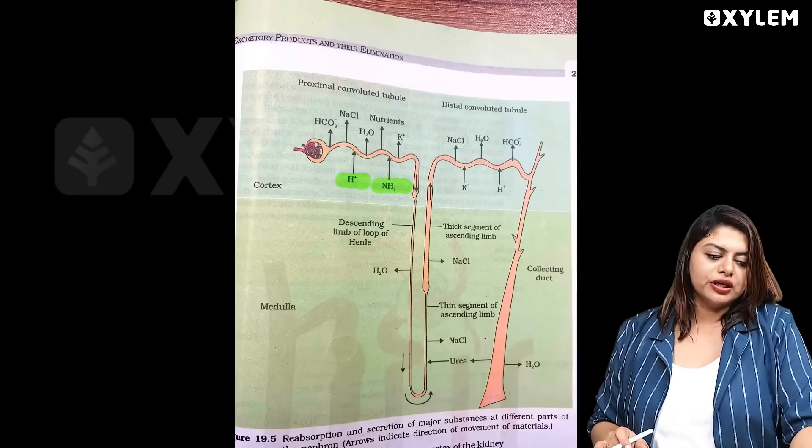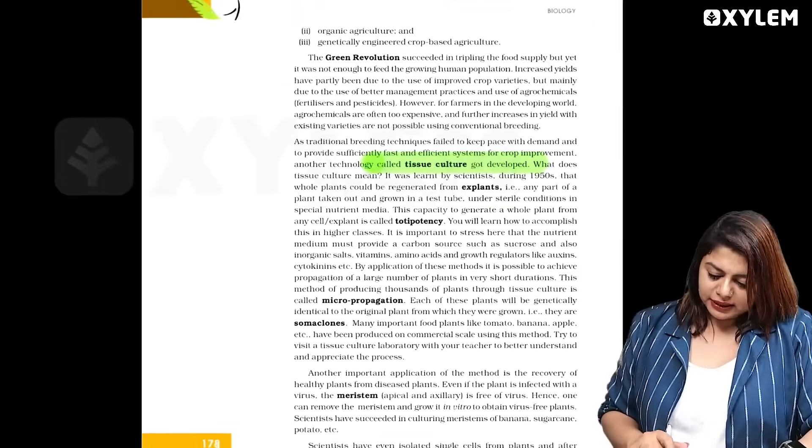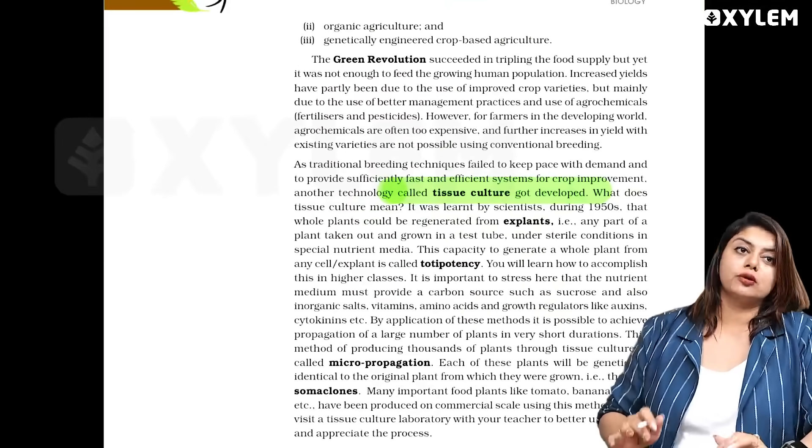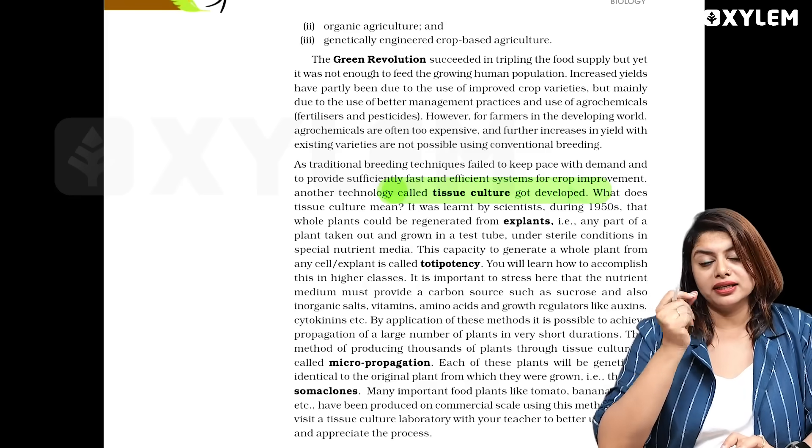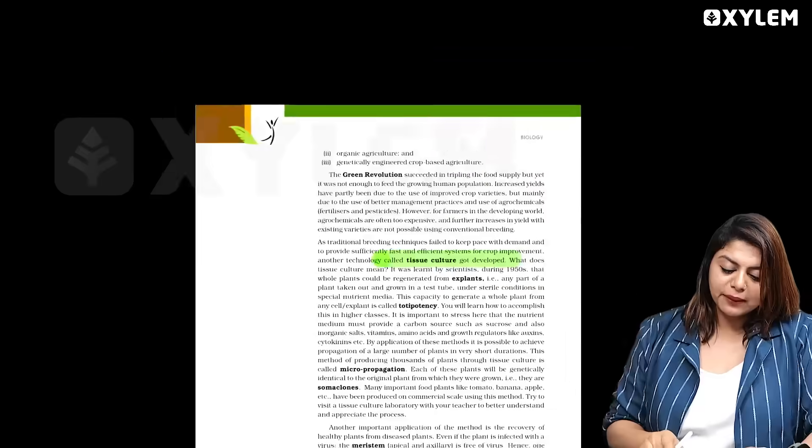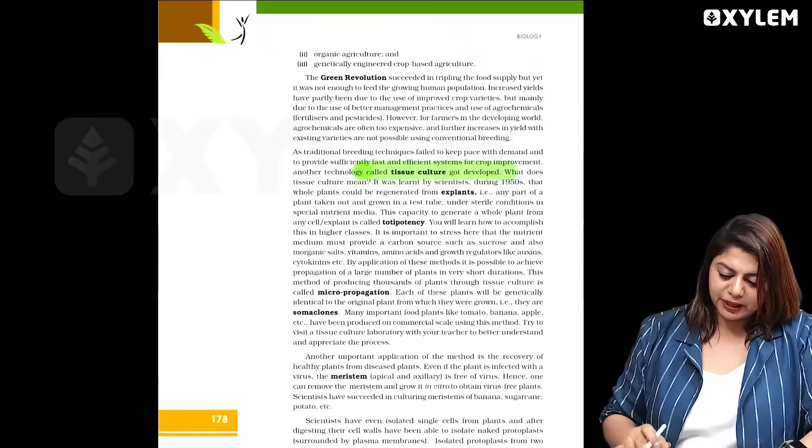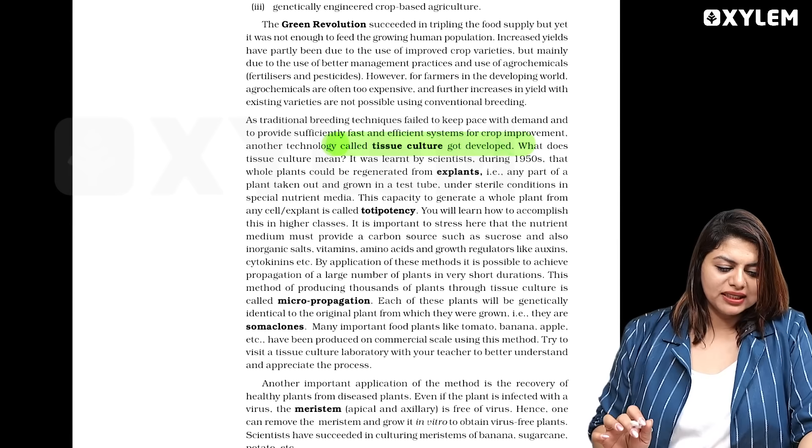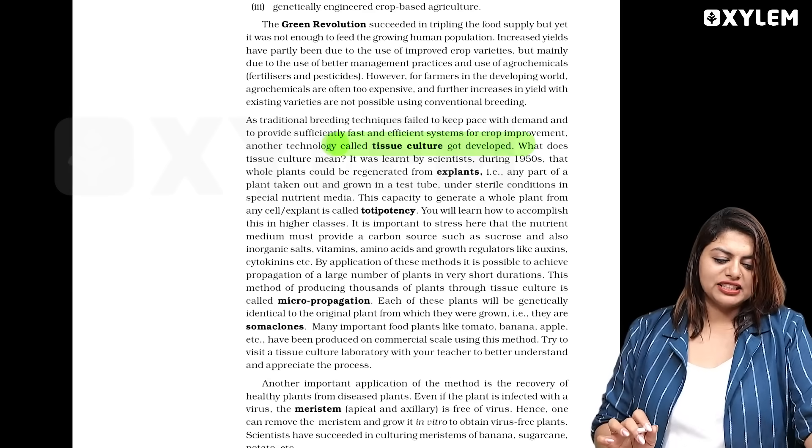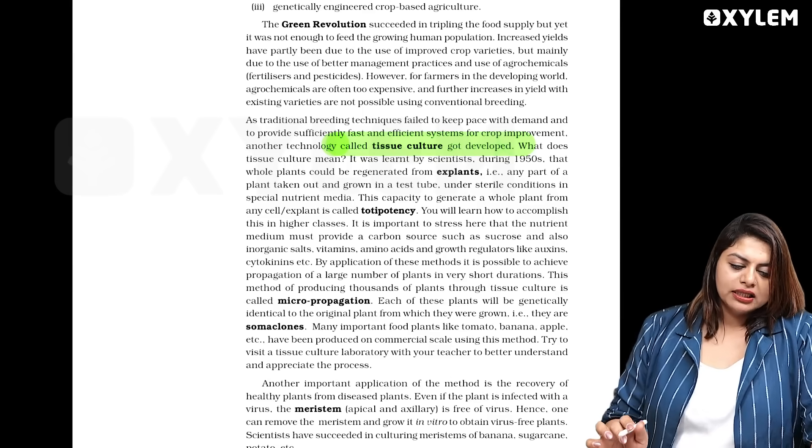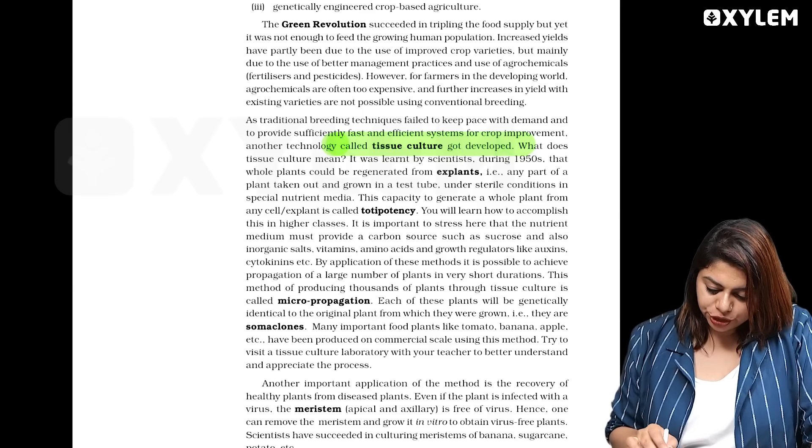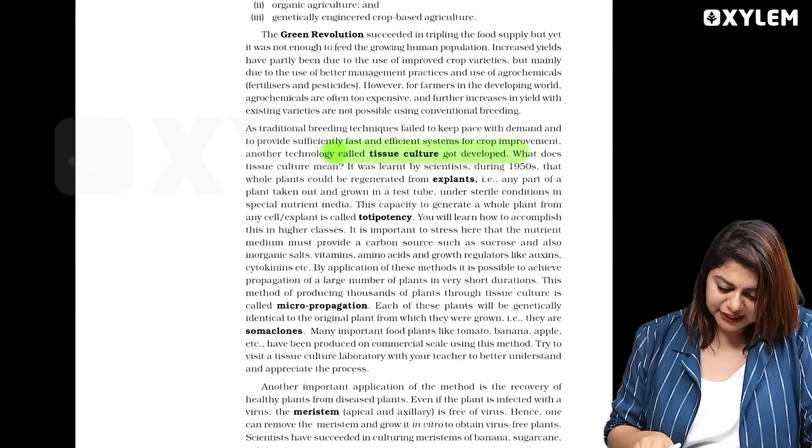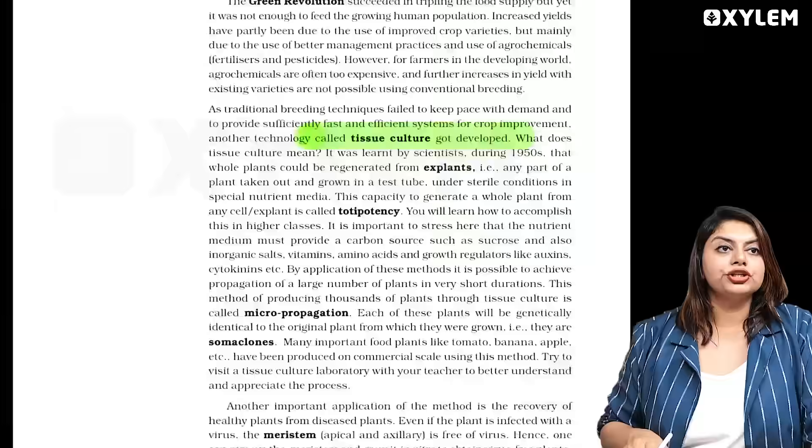We have a chapter removed from the strategies for enhancement in food production. But there is a topic about plant tissue culture. That is in our biotechnology chapter, in biotechnology applications. You can see it on page number 178. That is why plant tissue culture is not removed. Somatic hybridization and somaclones are mentioned.